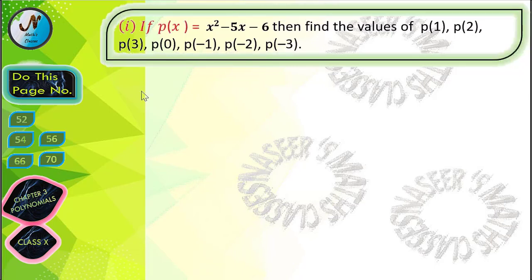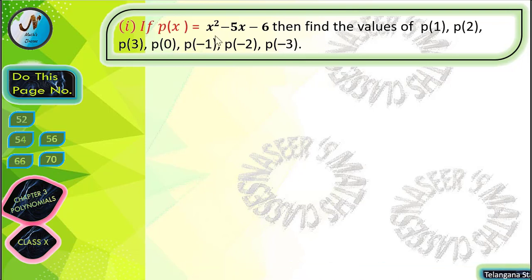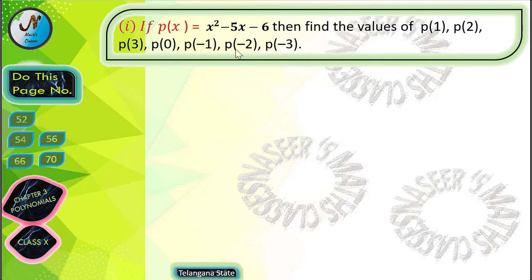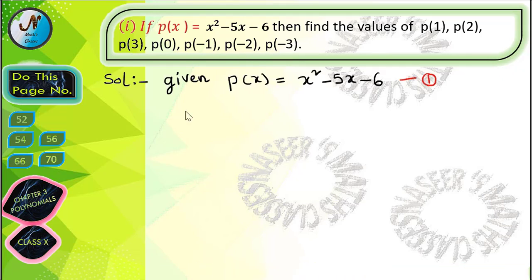We are going to solve page number 53, chapter 3, polynomials. It is given that p(x) is equal to x square minus 5x minus 6. Find the values of p(1), p(2), p(3), p(0), p(-1), p(-2), and p(-3). First, write the given polynomial p(x) = x square minus 5x minus 6. Let this be equation 1.